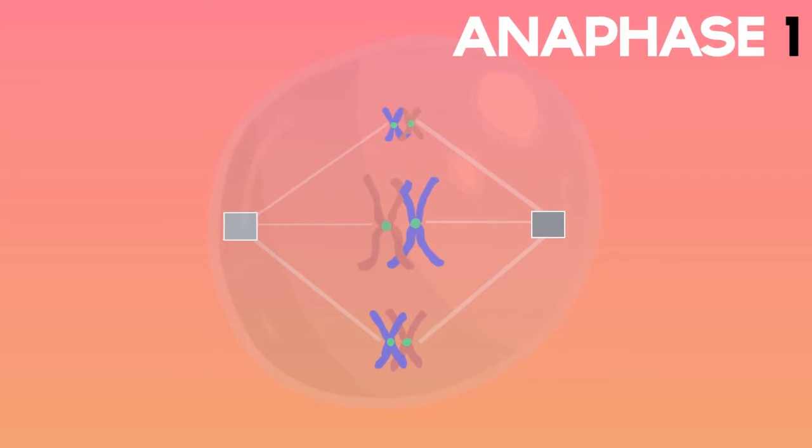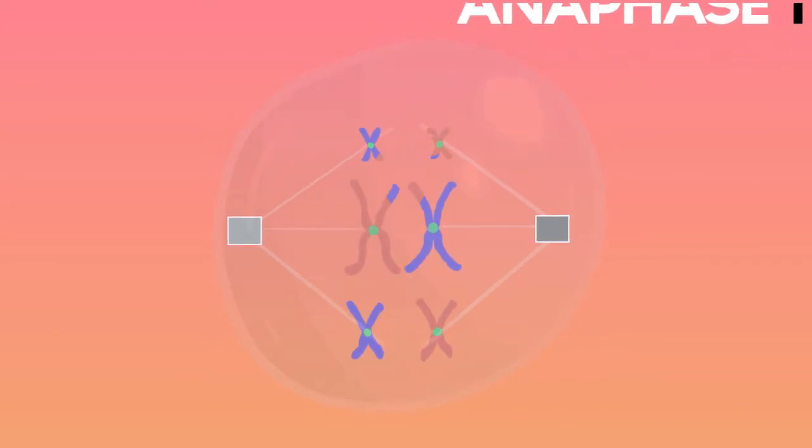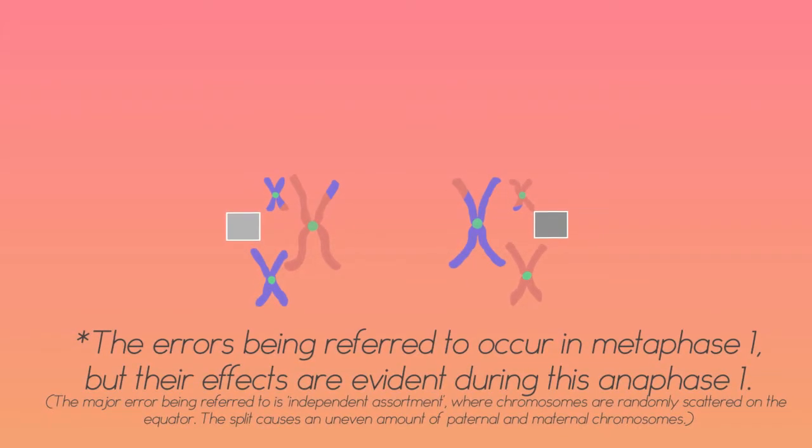Then, anaphase I occurs, where the homologous chromosomes are pulled to opposite poles of the cell by the spindle fibers. Anaphase I is crucial to meiosis because this phase is where many of the errors that can occur during meiosis happen.